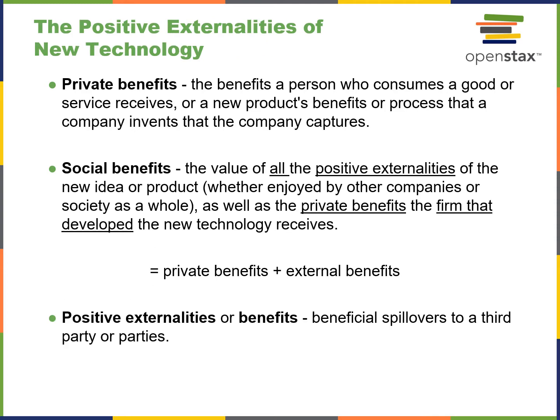Positive externalities of new technology: private benefits are what an individual gets when they consume a good or service, or what a new product benefits in a process. Social benefits are what society as a whole receives — social benefits equal private benefits plus external benefits. Positive externalities, or spillover benefits, are beneficial spillovers to a third party. These are three definitions you may see on the test.